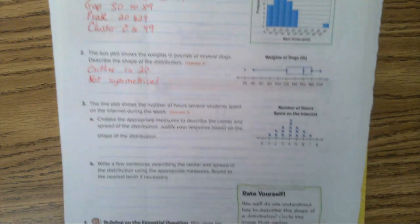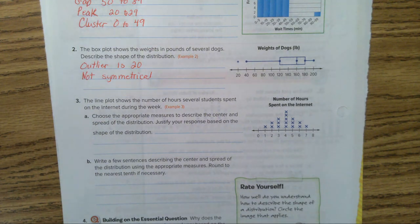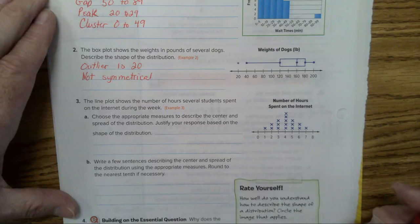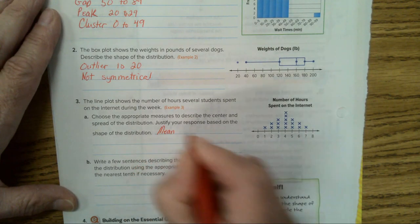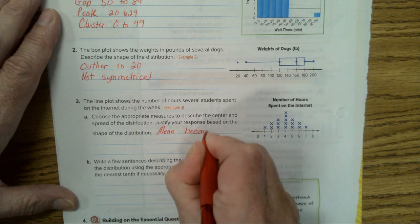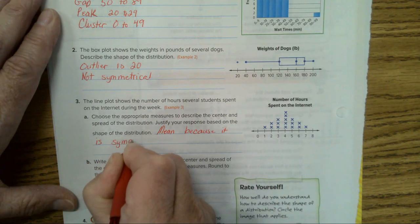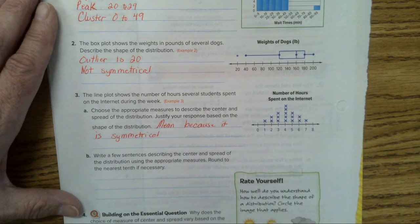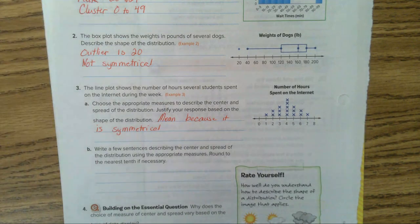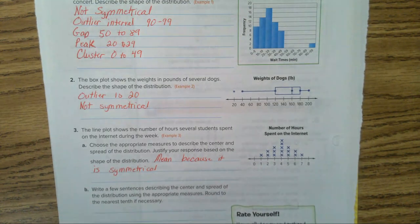Let's go to number three. Here we have another line plot. Choose the appropriate measures to describe the center and spread. What are we going to use? Yes. It's symmetrical. It's symmetrical. So what do you use when it's symmetrical? The mean. We're going to choose the mean. Because it's symmetrical. Yep. The left side matches the right side, doesn't it? We're not going to do part B here on this. Any questions on that?